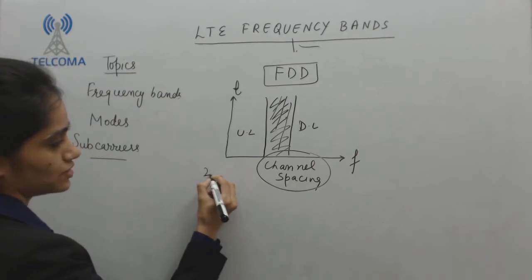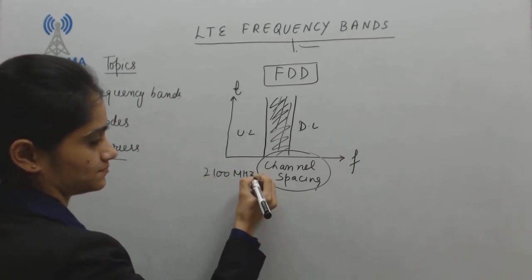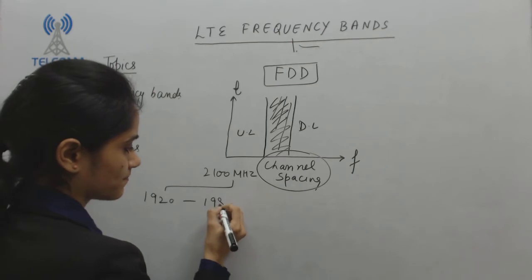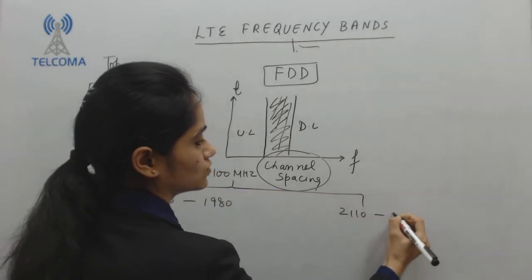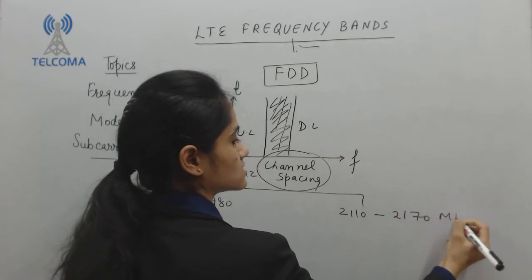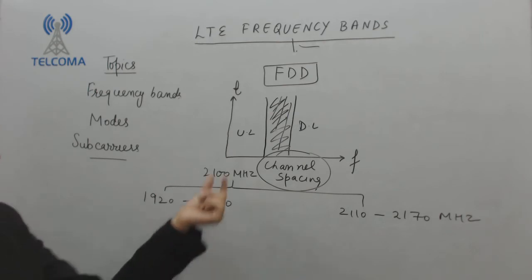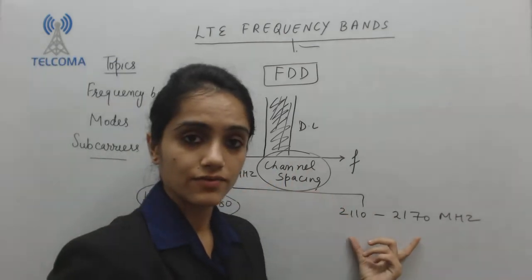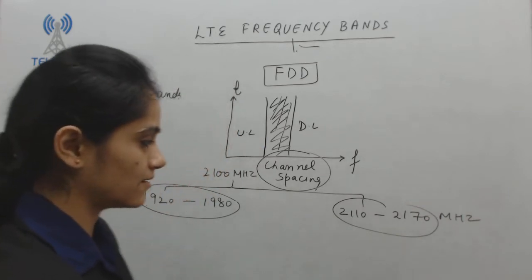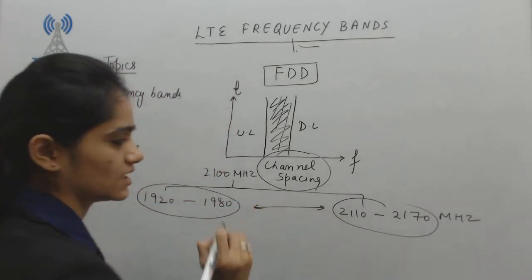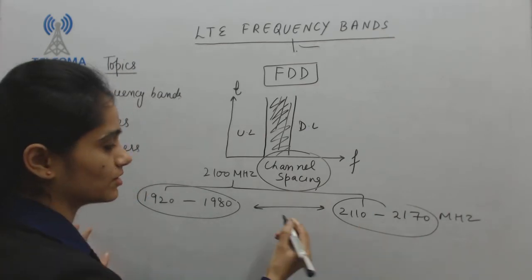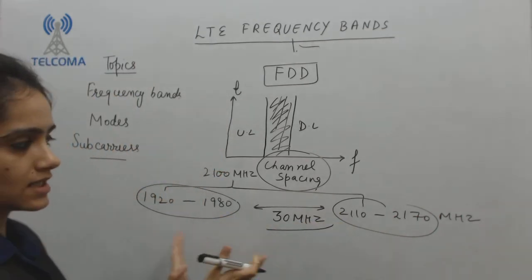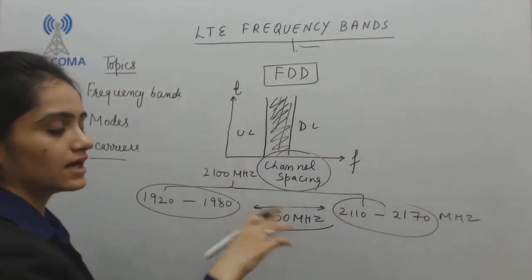For example, we have the 2100 megahertz band. This band is divided like this: 1920 to 1980 MHz is the uplink frequency, and 2110 to 2170 MHz is the downlink frequency. We have provided a space between them so they will never interfere — a space of 30 megahertz between the uplink path and the downlink path. This mode is FDD mode.